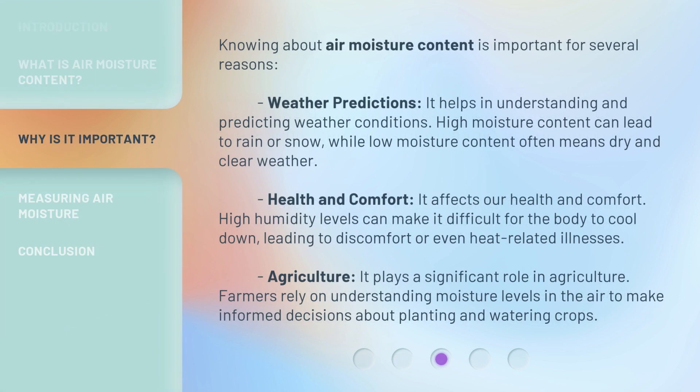Knowing about air moisture content is important for several reasons. Weather Predictions: it helps in understanding and predicting weather conditions. High moisture content can lead to rain or snow, while low moisture content often means dry and clear weather. Health and Comfort: it affects our health and comfort. High humidity levels can make it difficult for the body to cool down, leading to discomfort or even heat-related illnesses. Agriculture: it plays a significant role in agriculture. Farmers rely on understanding moisture levels in the air to make informed decisions about planting and watering crops.